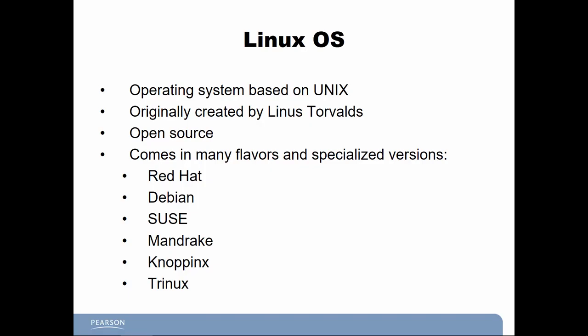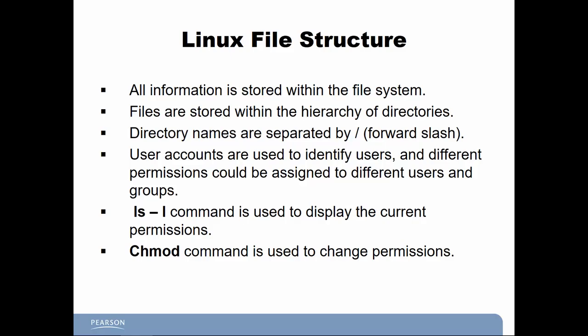Linux was originally created by Linus Torvalds. It's open source and comes in many different flavors and specialized versions like Red Hat, Debian, SUSE, Mint, and Kali. Open source does not mean free — it means the code is open and may fall under an open license like the GNU license. All information is stored in the file system within a hierarchy, similar to Windows, except directory names are separated by a forward slash instead of a backslash.